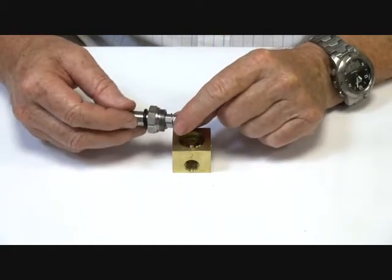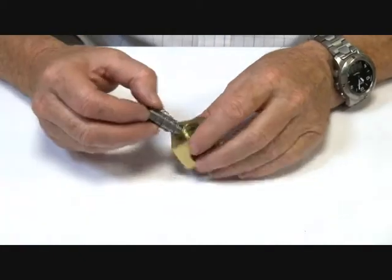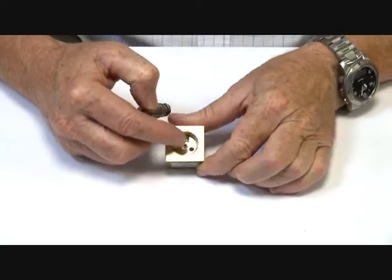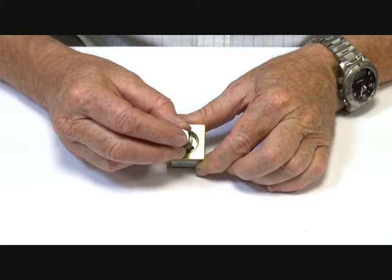We have the armature assembly here. The armature is normally sitting down on the seat and the media is coming in through the side entry here, sitting on top of the armature and assisted close with the spring.